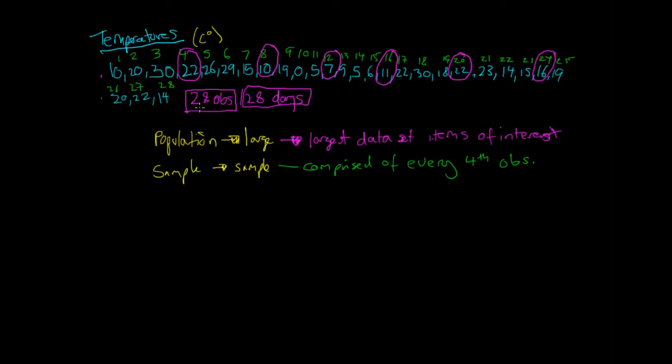If I just take every fourth observation, then I would be able to construct this sample. I would have 22, which is my first observation. I would have this 10, I would have this 7, I would have this 11, I would have this 22, I would have this 16, and I would have this 14. So this is the fourth observation sample.